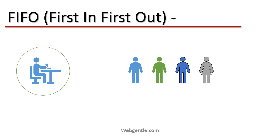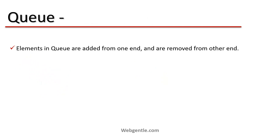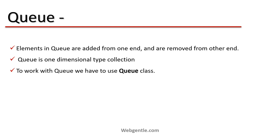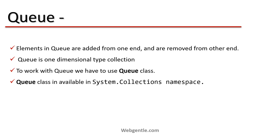In a Queue, elements are added from one end and removed from the other end, just like the ticket counter example. Queue is a one-dimensional type of collection — there is no 2D or 3D, only a simple normal queue. To work with the Queue we have to use the Queue class, which is available under the System.Collections namespace. Queue elements are of object type, meaning we can insert any type of element into the Queue.